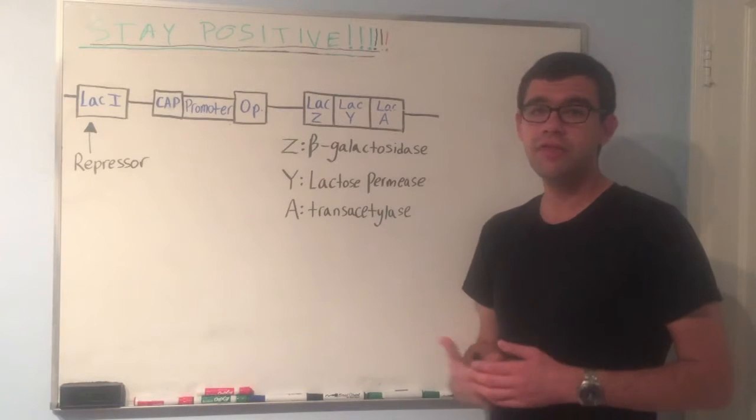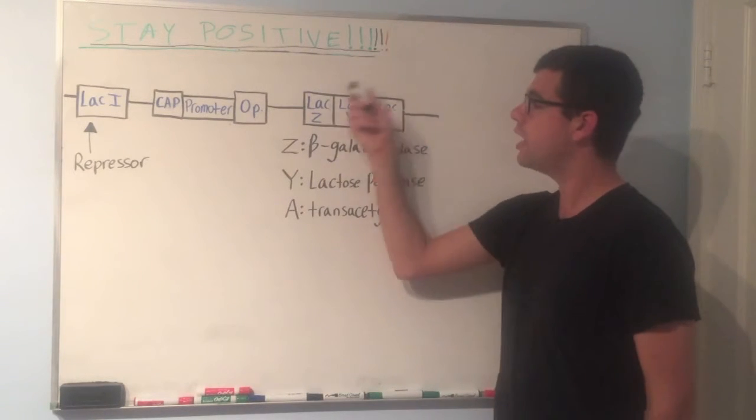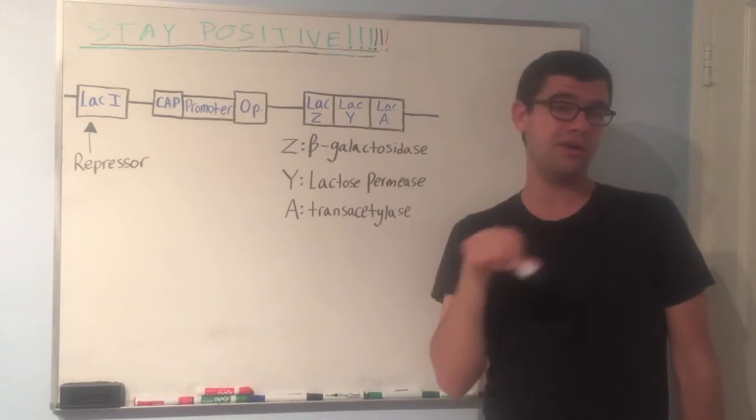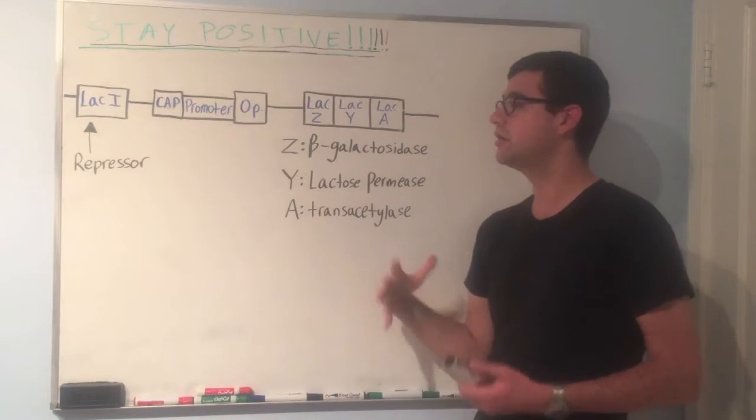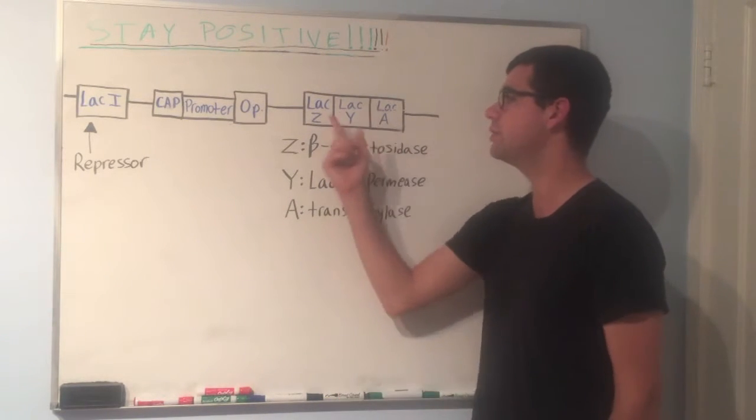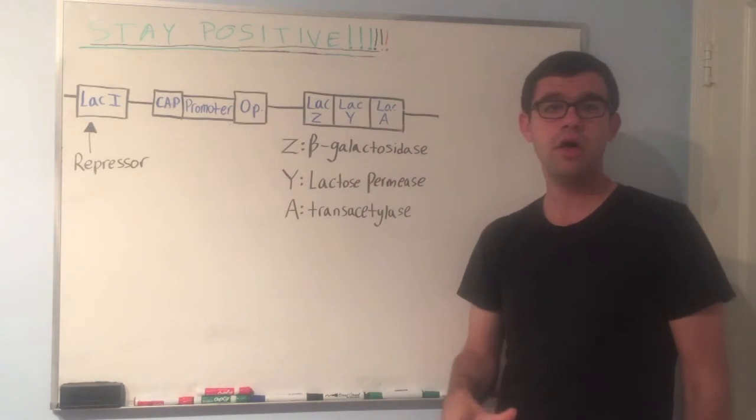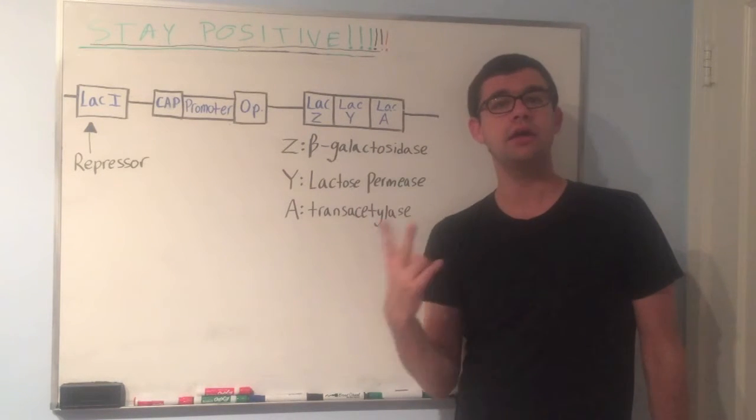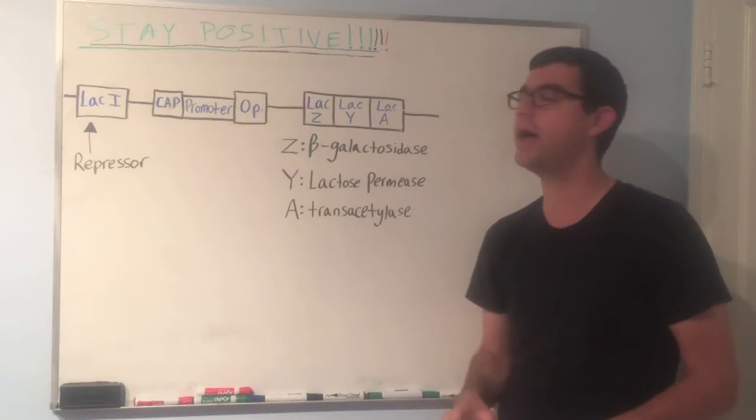So as a rule of thumb, you actually won't get a whole lot of expression of this if you have a large concentration of lactose and a large concentration of glucose, because you can almost think of it as the bacteria preferring glucose over lactose, and you actually won't express a whole lot of this. So rule of thumb, you want a large concentration of lactose and a low concentration of glucose.